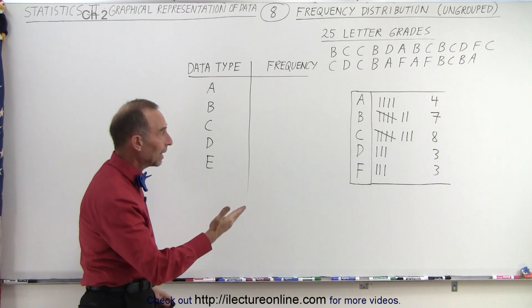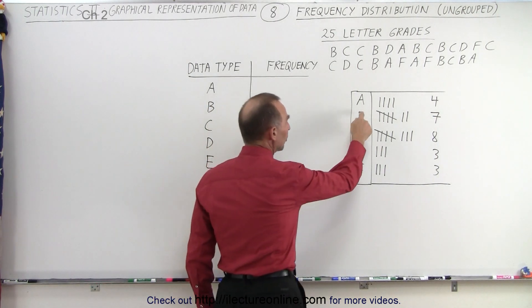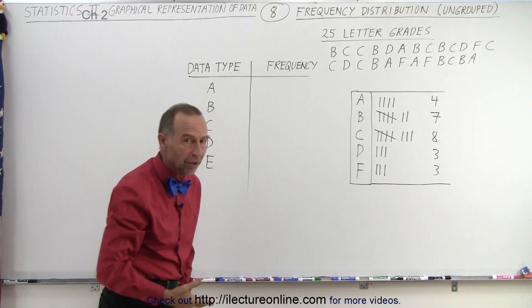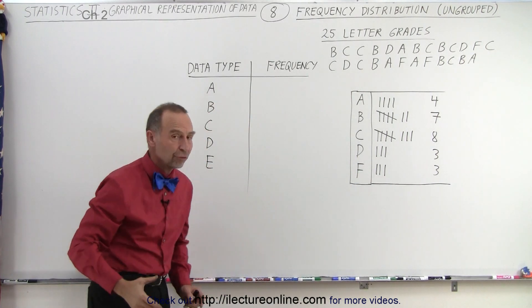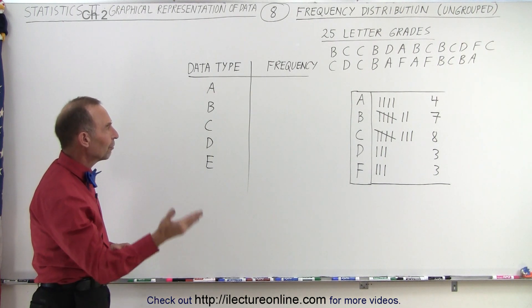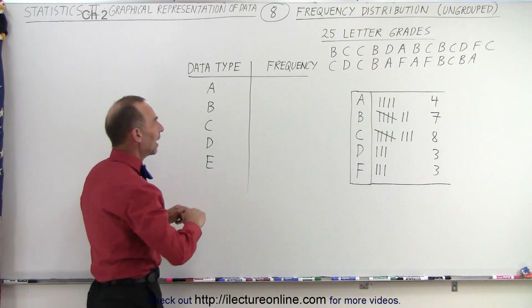For example, what we did last time, we found out the number of A's, B's, C's, D's and F's we had in our classroom on the test. We have a total of 25 data points, 25 letter grades, and so the frequency for each can then be tallied as follows.